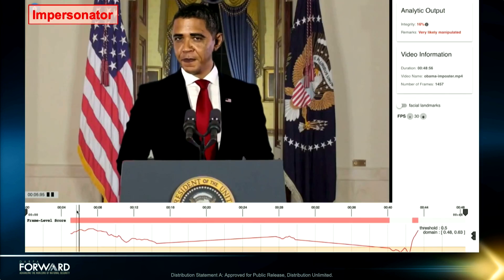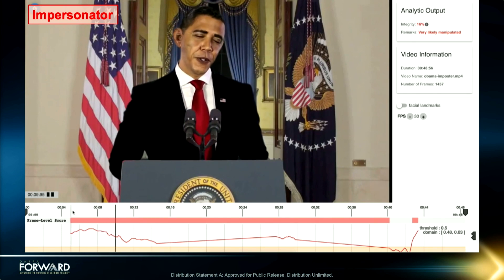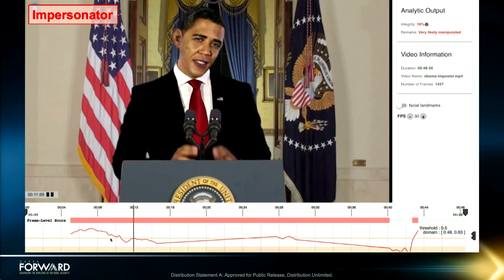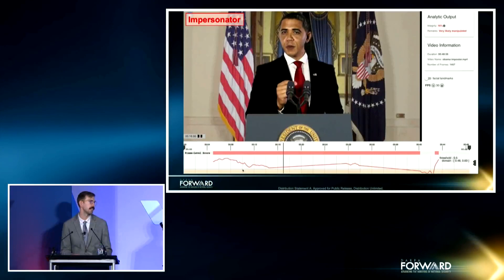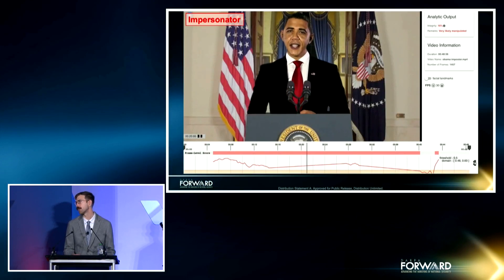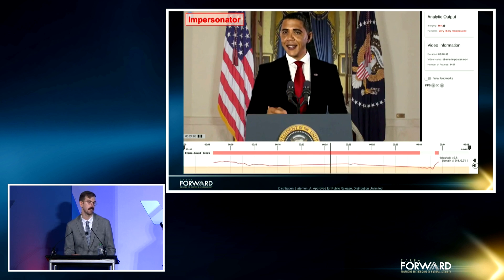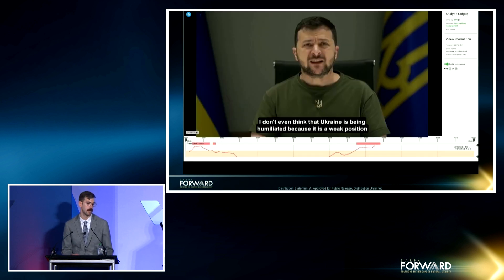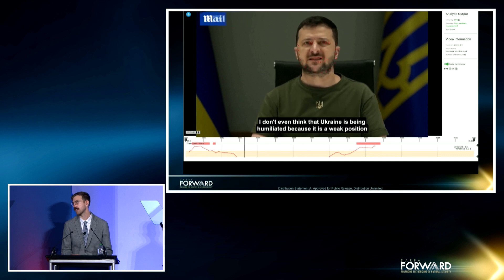This, in contrast, is a video of an impersonator, not a deepfake. One advantage of our approach is that unlike deepfake forensics, it's able to flag this video accurately with a low integrity score, even though there's no digital video manipulation present. Also note higher frame-level scores above the 0.5 threshold in orange, indicating manipulation. And here's an example of a pristine video with no manipulation, and the system detects it correctly with a high integrity score at the top right.